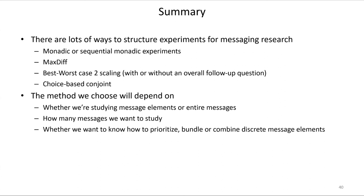I wrote a paper in the nineties about order effects in choice-based conjoint. It was easier back then with aggregate models where sample size wasn't as much of a problem. I can imagine you might end up using aggregate logit instead of hierarchical Bayes if you're trying to measure order effects — but maybe I'm just not thinking about it enough. Good question — I hadn't thought about it before.